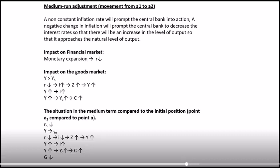The central bank implements expansionary monetary policy by decreasing interest rates, increasing the level of output towards the natural level. The chain of events: monetary expansion decreases the policy rate R (interest rate). Because of lower interest rates, investment increases. If investment increases, demand for goods and services increases. Actual output increases. With higher Y, disposable income increases and consumption increases. Throughout this process, the multiplier is in operation. This is the medium-term adjustment moving from Y1 to YN.